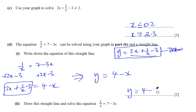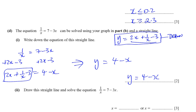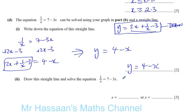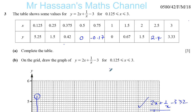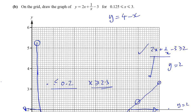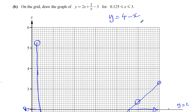For part D they didn't ask us to solve it — they just asked us to write down the equation of the straight line we'd need to draw on the same graph to solve the equation. So the straight line is y equals 4 minus x. Now I need to go back to my graph and draw that line. To draw a straight line you need two points. So: when x is 0, y is 4 — that's one point. When x is 1, y equals 4 minus 1 equals 3 — that's another point.